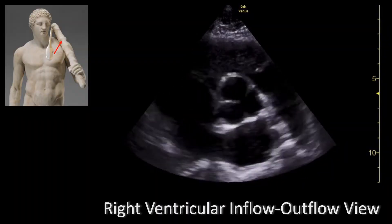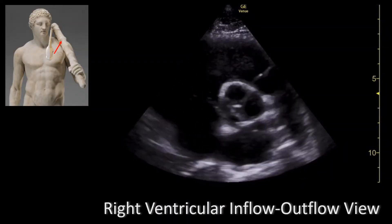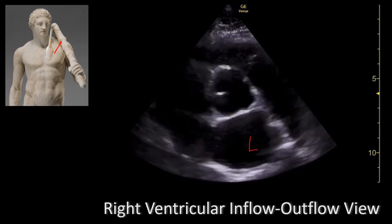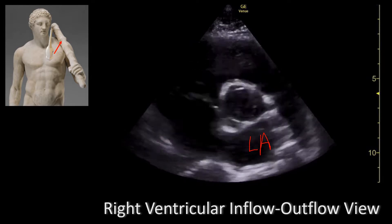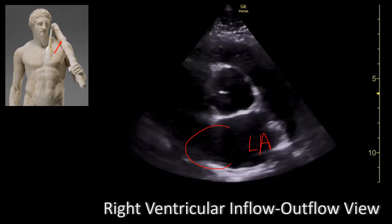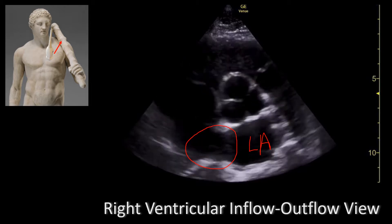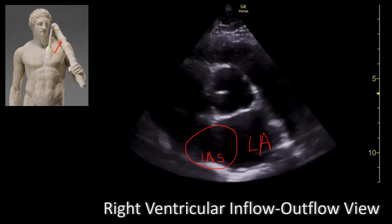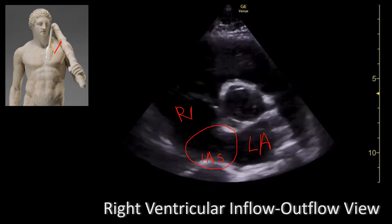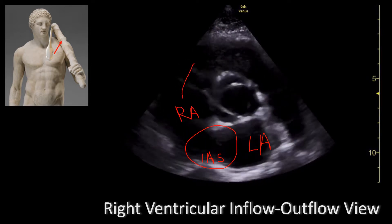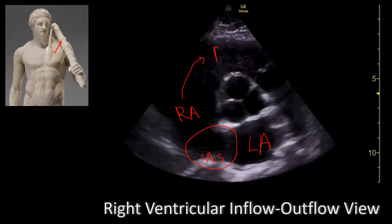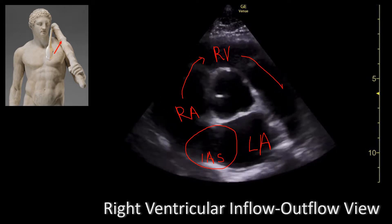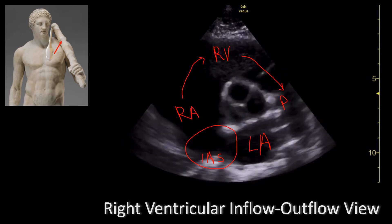Now let's talk about the structures we're looking at in the right ventricular inflow outflow view. The cavity that's farther away from your probe is going to be the left atrium. What I'm circling right now is actually not very clearly visible in this particular case, but it's the interatrial septum. On the other side of the septum you have the right atrium, which empties into the right ventricle, and the right ventricle will empty into the pulmonary artery.